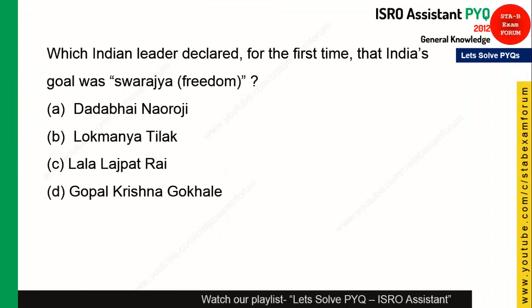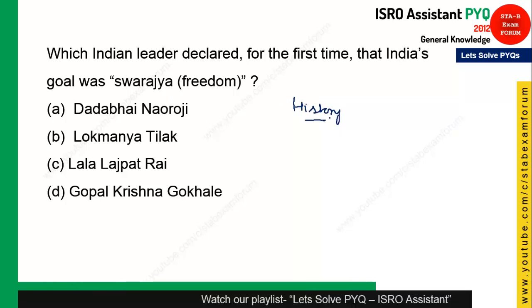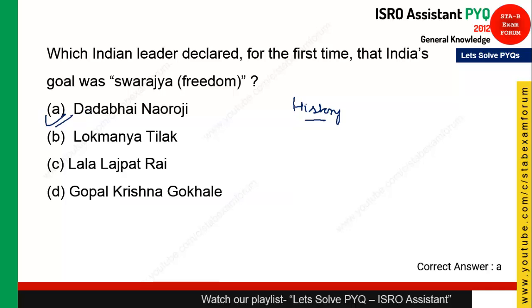The next question is from history: which Indian leader declared for the first time that India's goal was Swaraj — freedom? The answer is Dadabhai Naoroji, who around 1906 said that the goal of India is Swaraj. Option A is the right answer.